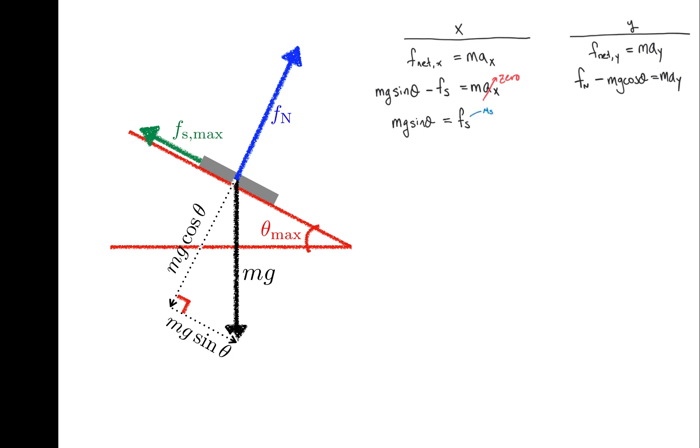fs max is mu s fn, and I can learn about the normal force by looking at the y direction. ay is zero, so fn is equal to mg cosine theta. I'll make that substitution, get rid of mg, and rearrange to find that mu s is equal to sine theta over cosine theta. Of course, sine theta over cosine theta is tangent theta. I was curious about theta max, so let me take inverse tan of both sides, and I find that theta max is inverse tan of mu s.